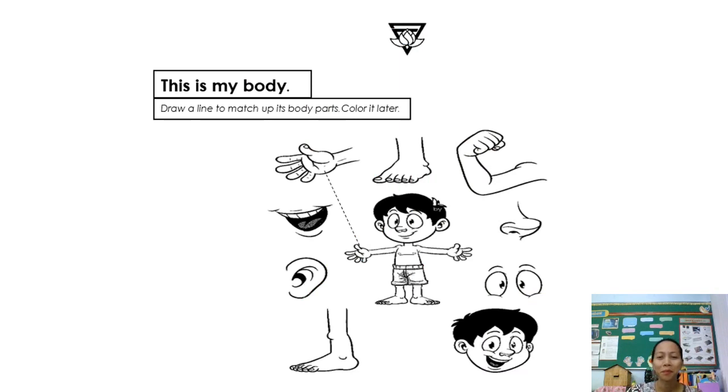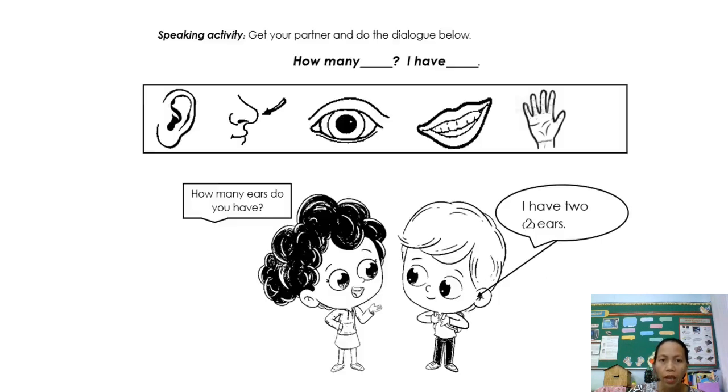Now, I hope that you get something from our lesson today. Since our time is limited, I want you to answer this worksheet. I know that you have this already in your home. This is how to answer this worksheet. Draw a line to match up its body parts. Color it later. Can you see this? I give you already the example. You're going to draw a line to match each body part. This is the body of the boy, and then you're going to match it. Hand, and then the other one is hand. You just only connect each other.